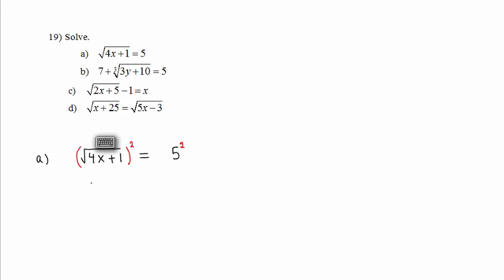On the left-hand side, we get 4x plus 1. On the right-hand side, we get 25. Subtracting 1 from both sides, we have 4x equals 24, and dividing both sides by 4, we get x equals 6. A quick check would prove that this solution is indeed correct.